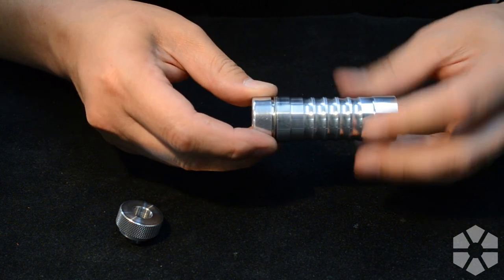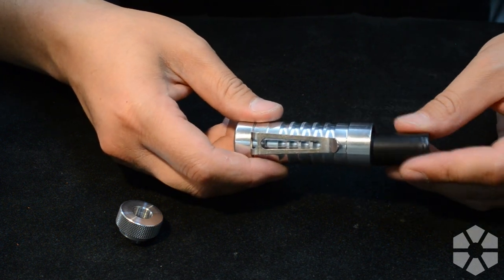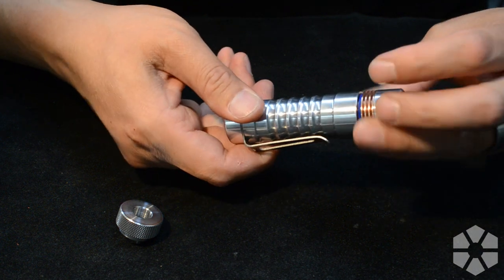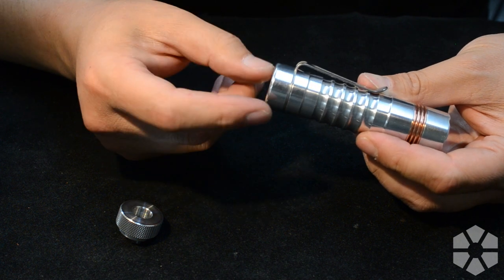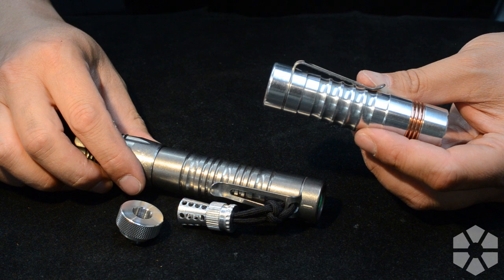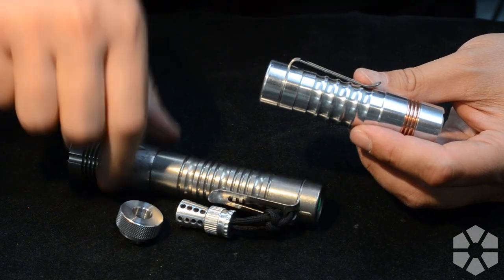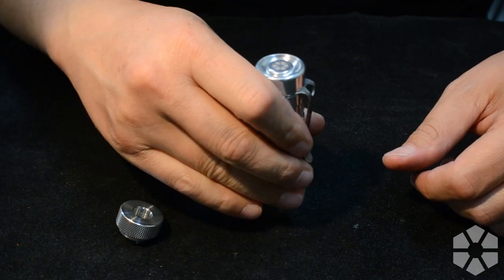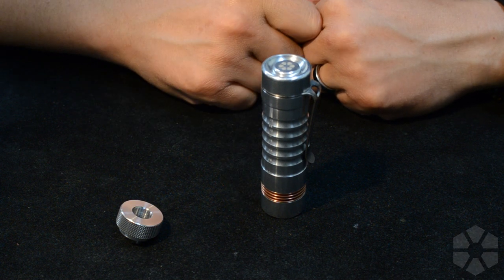All right, that's pretty much all there is to it. Put my flashlight back together. Pocket clip. Good. Battery. Head. Oh, I guess I should also mention that the Delta flashlights use the exact same tail cap as your Alpha flashlights. So there you go. Thanks for tuning in. We'll see you next time.